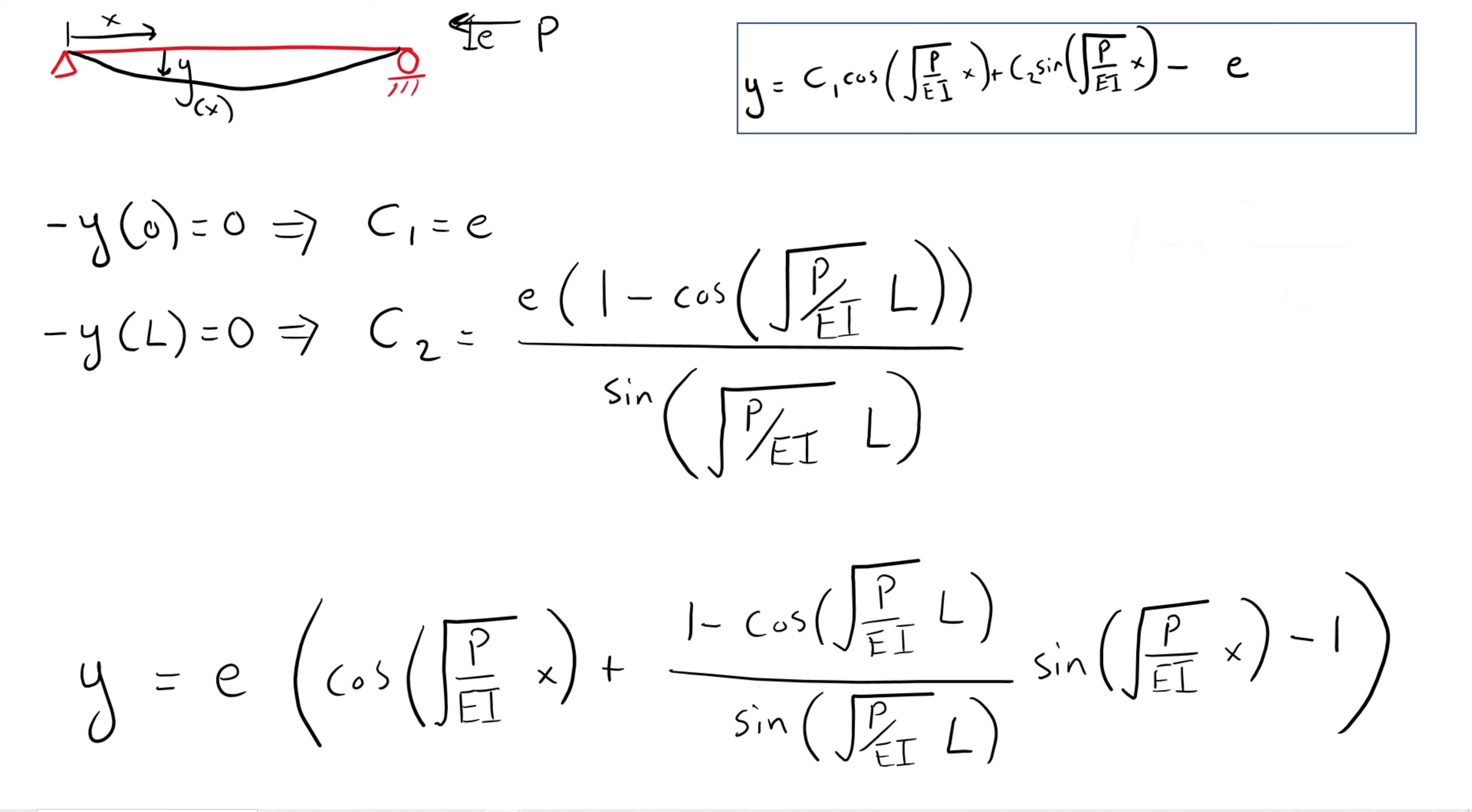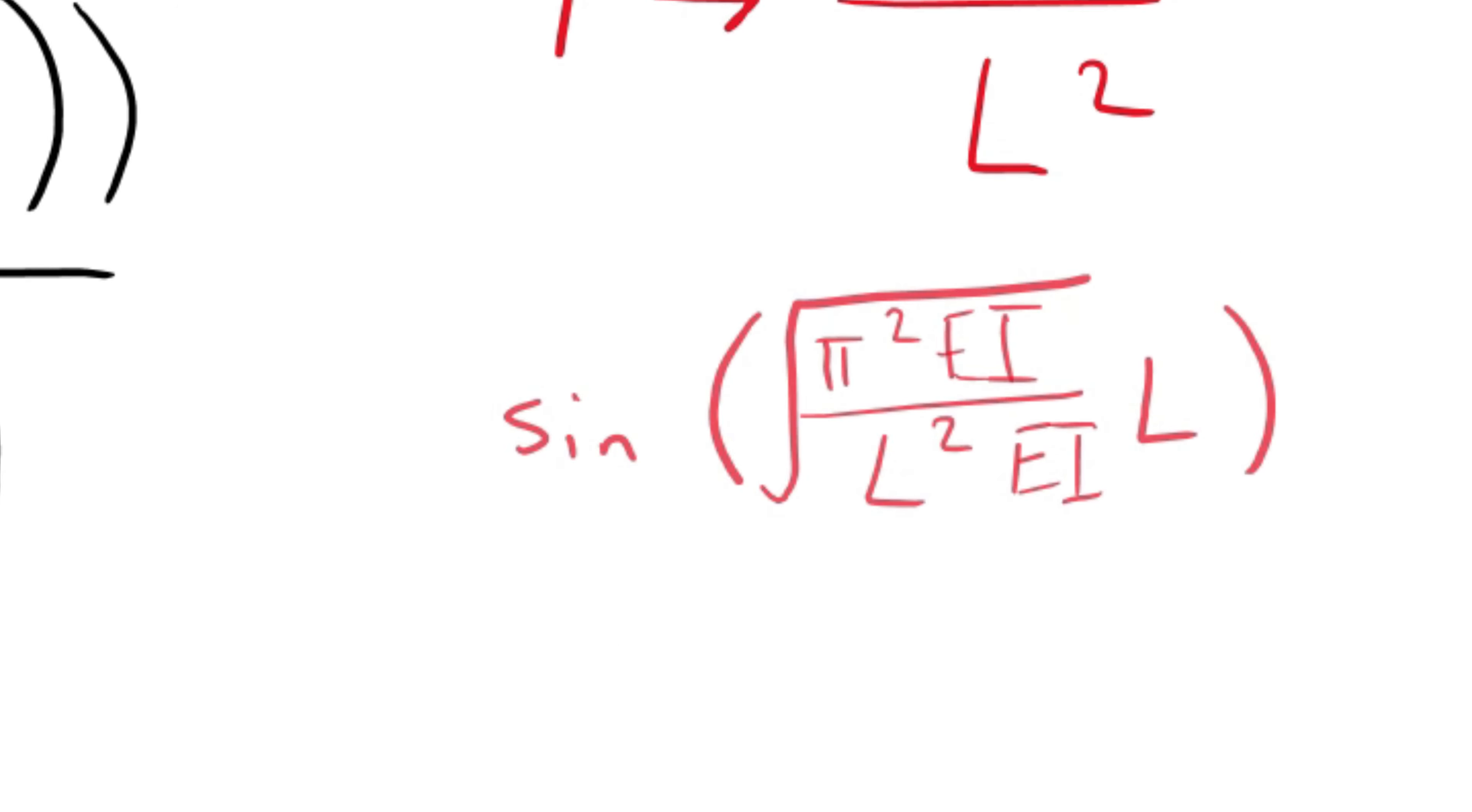Previously, the question was, what will the deformed geometry be in combination with a certain load P that will achieve equilibrium? Now, it is more of how does the axial load modify the deflected shape?